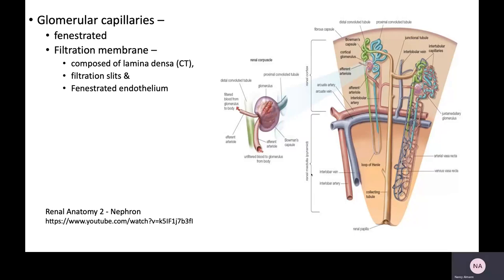The glomerular capillaries themselves are fenestrated and form what's known as a filtration membrane with filtration slits. You can see the glomerulus housed inside the renal corpuscle and how the tubule extends off of it.